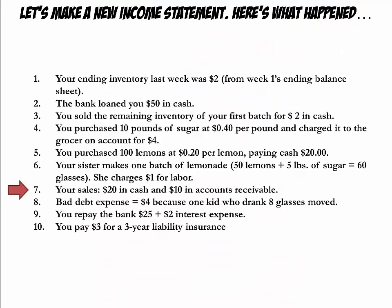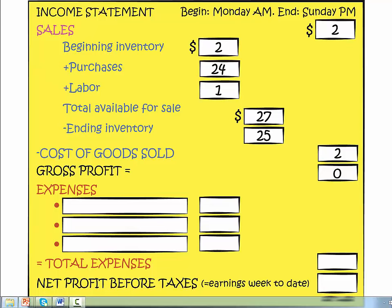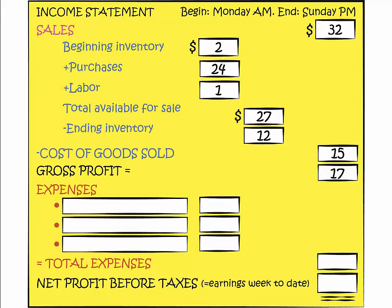You next went out to sell lemonade and sold the entire batch of 60 glasses, receiving $20 in cash and $10 in accounts receivable. You sold 60 glasses for which customers paid $30 total. Whether or not they paid in cash is irrelevant — the only thing that matters is whether or not the sale occurred. This brings the ending inventory down to $12. We sold our $2 in lemonade from last week as well as our entire fresh batch, which cost $12 in ingredients and $1 in labor. Therefore, our cost of goods sold was $2 + $12 + $1 = $15, bringing our gross profit to $32 minus $15, which equals $17.